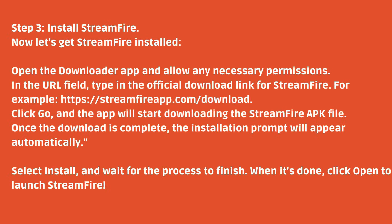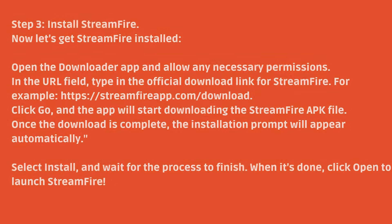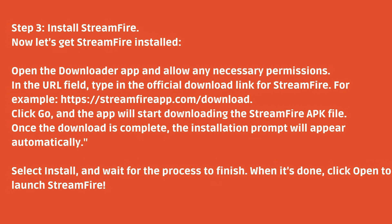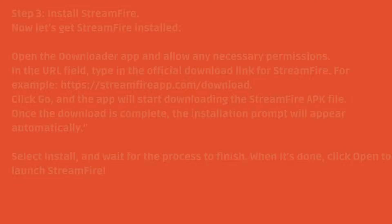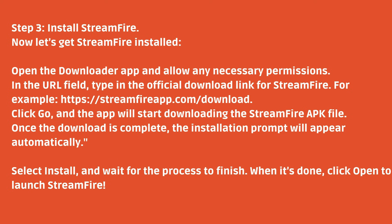Step 3: Install StreamFire. Now let's get StreamFire installed. Open the Downloader app and allow any necessary permissions. In the URL field, type in the official download link for StreamFire — for example, streamfireapp.com/download — and click Go. The app will start downloading the StreamFire APK file. Once the download is complete, the installation prompt will appear automatically. Select Install and wait for the process to finish. When it's done, click Open to launch StreamFire.